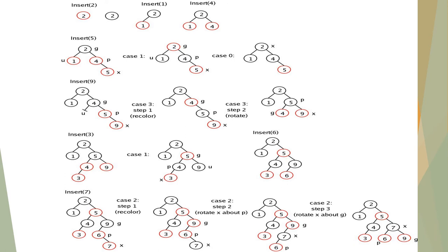Next, insert 9. As it is greater than 2, it is placed at the right sub-tree. And as it is greater than 5, it is placed at the right side of 5. No two continuous nodes should contain red color, but here 5 and 9 contain red color. We have to change the colors here — make 4 as red color and 5 as black color. Here we have to perform a single left rotation, so rotate node 4 to the left side.